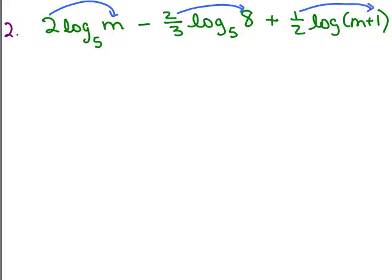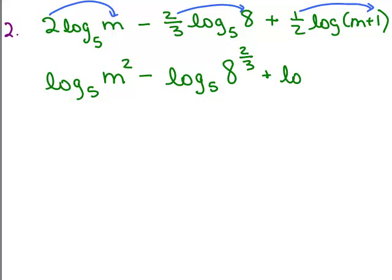So this will give me, I hope you're doing this on your own at the same time or even before me, this would be log₅(m²) - log₅(8^(2/3)) + log₅((m + 1)^(1/2)).